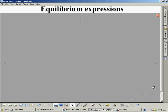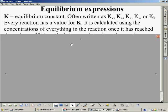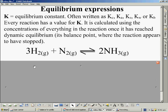The next part of this video is how to write equilibrium expressions. The letter K is used for an equilibrium constant. There are a few different subscripts that this is often paired up with however that's not too important right now. The thing is that every reaction will have a value for K and how it is calculated is using the concentrations of everything in the reaction once it is at its dynamic equilibrium point. And that's the point where the reaction appears to have stopped.